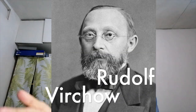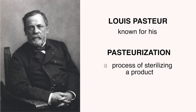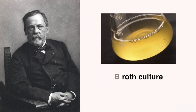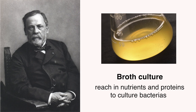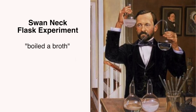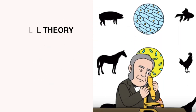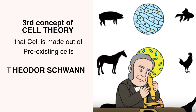Even though Dr. Rudolf Virchow, who is the father of pathology, supported the claims of Theodor Schwann, there was actually no evidence to support their claims — not until Louis Pasteur saved the day by providing evidence. Louis Pasteur is widely known for his pasteurization process of sterilizing products such as milk and wine so they won't get spoiled. He came up with the idea of boiling a broth — a substance rich in nutrients and protein used to culture bacteria. Using his swan-neck flask experiment, he provided evidence that cells were able to multiply from already existing cells after boiling the broth, thus establishing the third concept of cell theory: all cells are made from pre-existing cells, making it universally accepted and making Theodor Schwann the founder of cell theory.